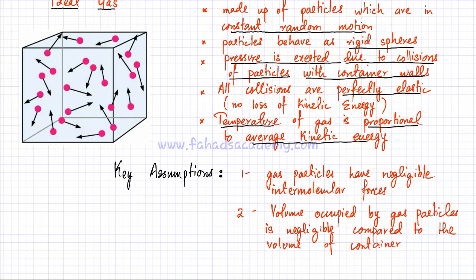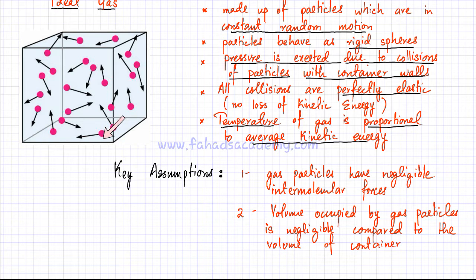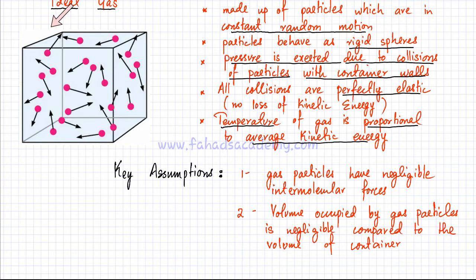Wherever there are gas particles in a particular container, most of the container is just empty space. The gas particles themselves have very negligible volume, but they end up spread out in all directions with large gaps between them. So the gas particles are occupying a very negligible volume compared to the volume occupied by the entire container.